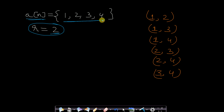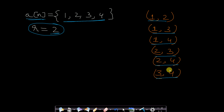The combinations will be: 1,2 then 1,3 then 1,4 then 2,3 then 2,4 and 3,4. So how do you print it? This is a recursion or backtracking type of problem. Let us see how to solve it — I will just give you the intuition and the code will be present in the description section below.